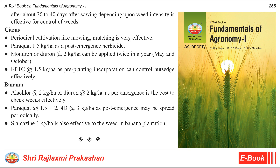Citrus. Periodical cultivation like mowing and mulching is very effective. Paraquat at 1.5 kg per hectare as a post-emergence herbicide. Monuron or diuron at 2 kg per hectare can be applied twice a year, in May and October. EPTC at 1.5 kg per hectare as pre-planting incorporation can control nutsedge effectively. Banana. Alachlor at 2 kg per hectare or diuron at 2 kg per hectare as pre-emergence is best to check weeds effectively. Paraquat at 1.5 plus 2,4-D at 3 kg per hectare as post-emergence may be applied periodically. Simazine at 3 kg per hectare is also effective for weeds in banana plantations.